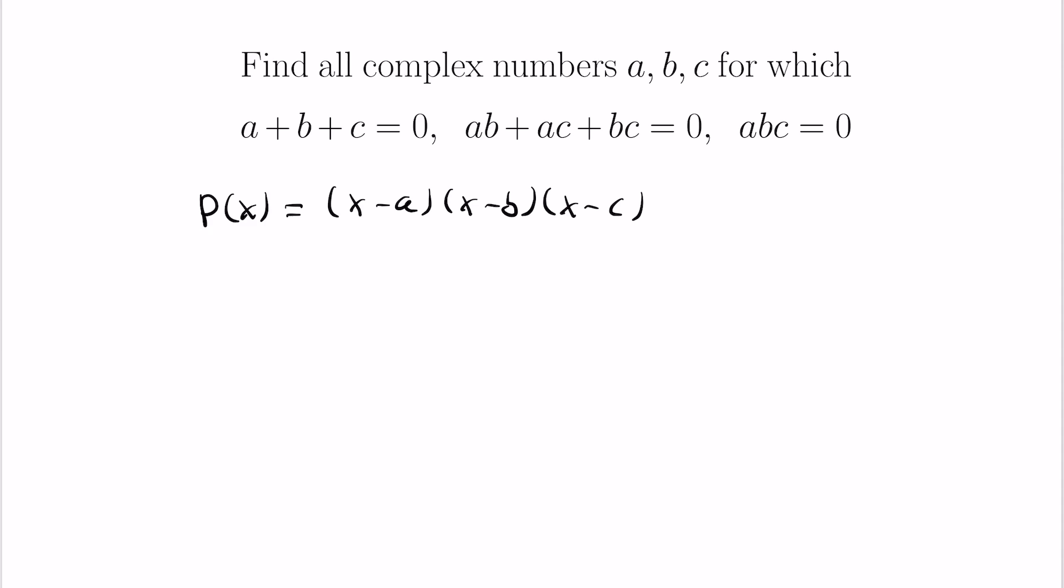Now if we knew what the actual polynomial p of x was and we're able to find out the roots of that polynomial in a different way, we'd have access to all of the possibilities of a, b, and c.